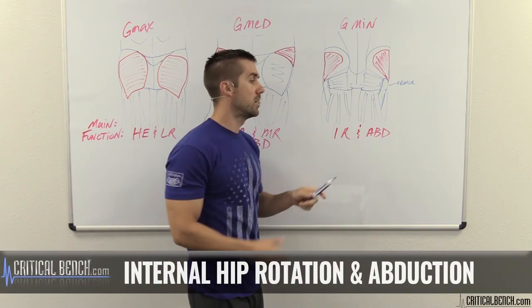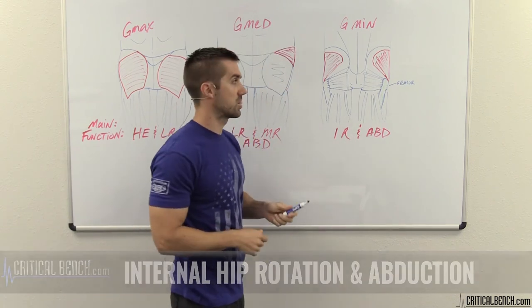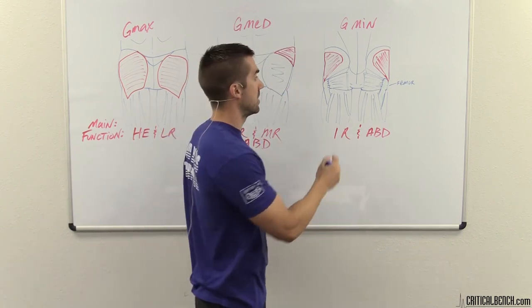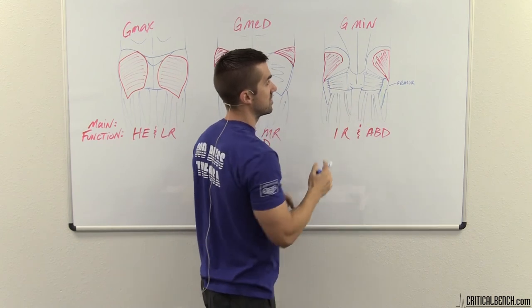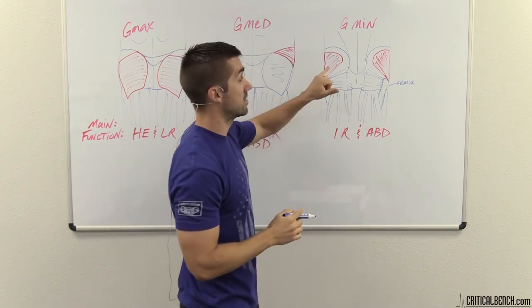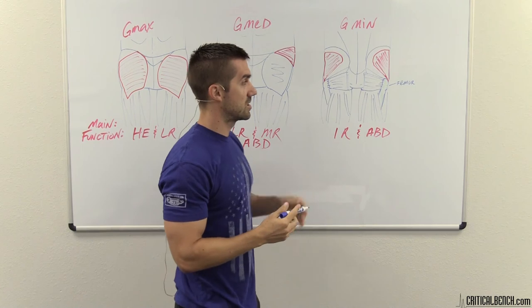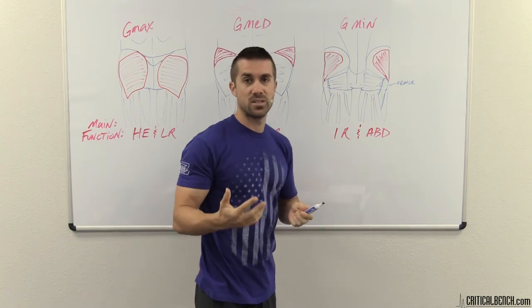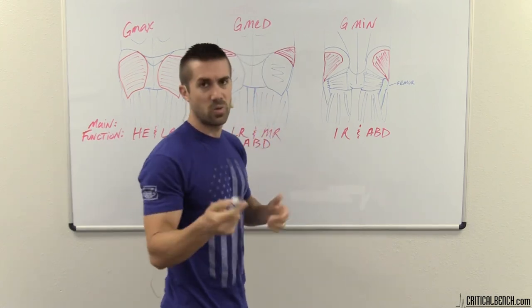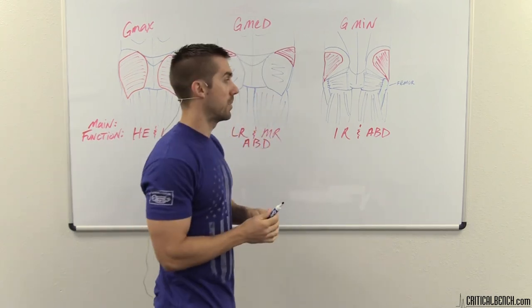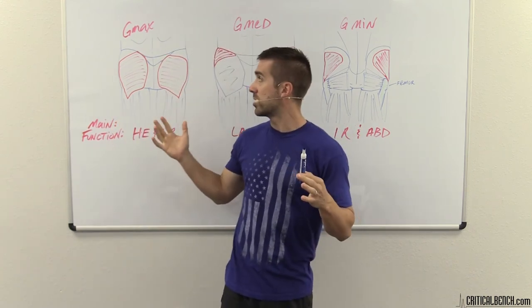The gluteus minimus also helps with abduction. As you can see, this is your femur right here — it attaches to that. It is the smallest of the muscles, which is why it's more of an assistance or stabilizing muscle with some small functions.